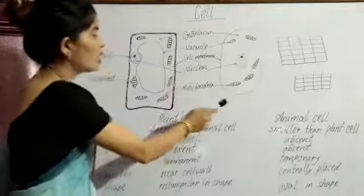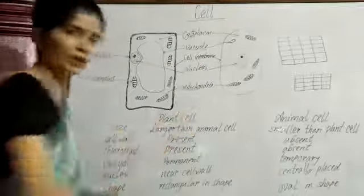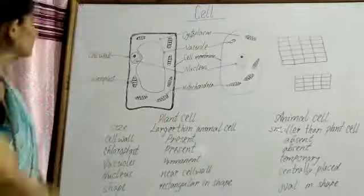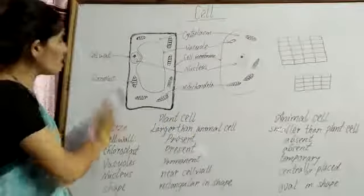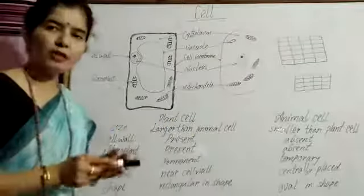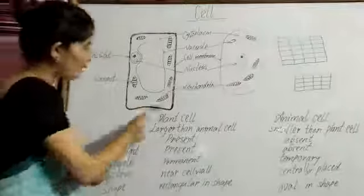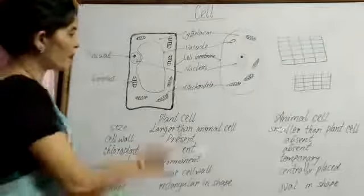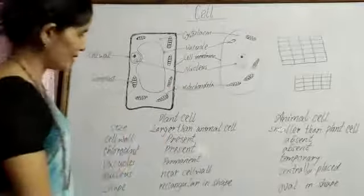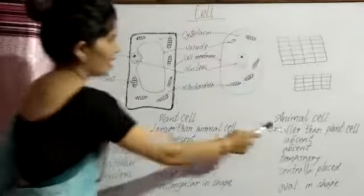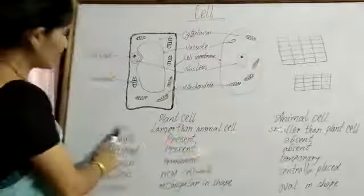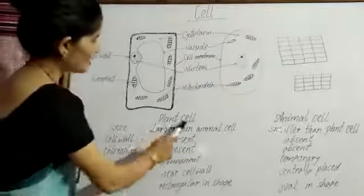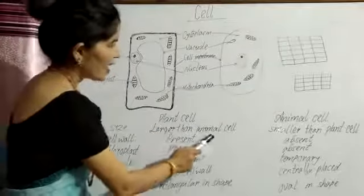Cytoplasm, vacuole, cell membrane, nucleus, and mitochondria are common organelles. But, cell wall and chloroplasts are only found in plant cell. Let's see the difference between plant cell and animal cell. Size: Plant cell is larger than animal cell. Animal cell is smaller than plant cell.